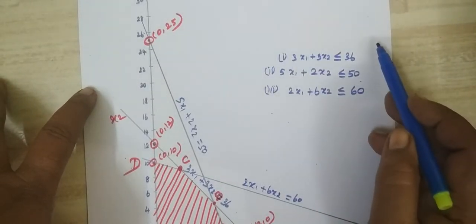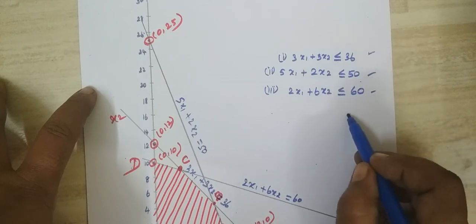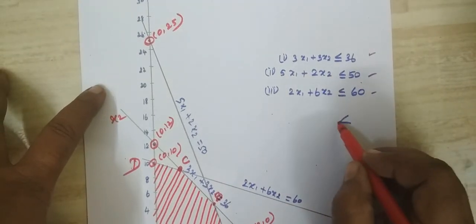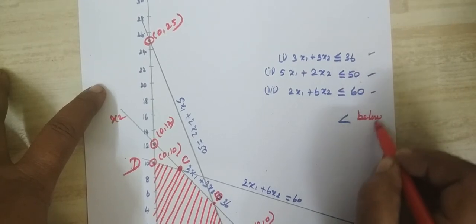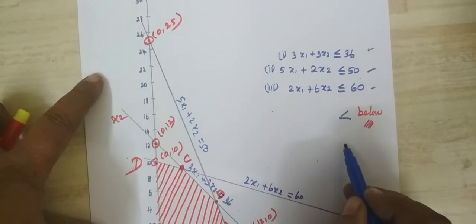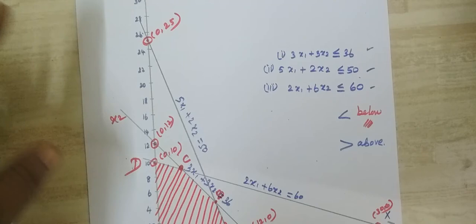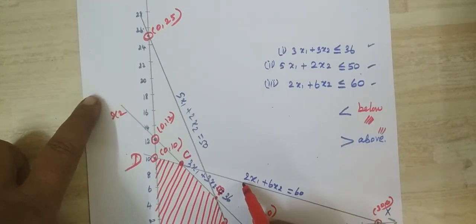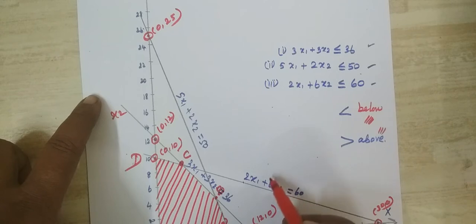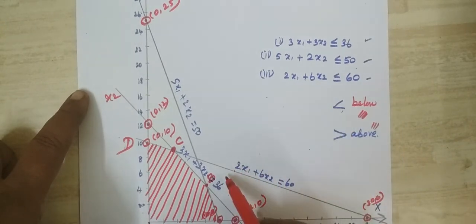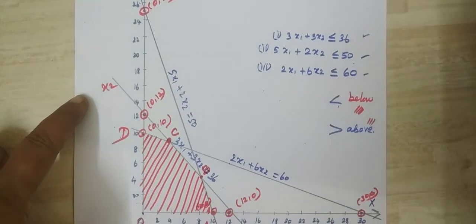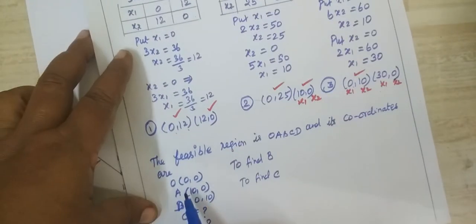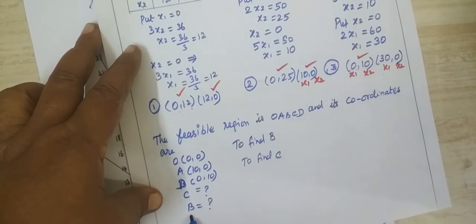The reason we shade below the lines is because the constraints are less than or equal to. If it were greater than, the region would be above the straight line. Since the constraints are less than or equal to, the feasible region is below the lines.